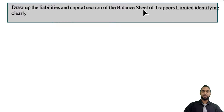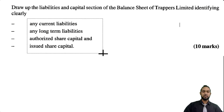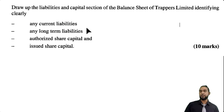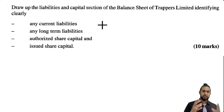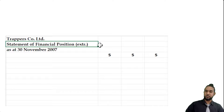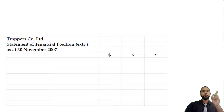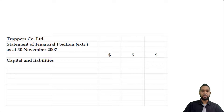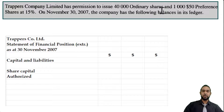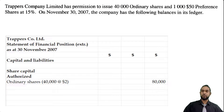Now let's look at Part B, which asks us to draw up the liabilities and capital section of the balance sheet of Trappers Limited, identifying clearly any current liabilities, long-term liabilities, authorized share capital, and issued share capital. Note that in order of permanence, capital comes before liabilities, and we now call it non-current liabilities rather than long-term liabilities. Heading up properly: Trappers Company Limited — Statement of Financial Position as of 30th November 2007. We start with the authorized share capital: 40,000 ordinary shares at $2 each is $80,000, and 1,000 preference shares at $50 is $50,000. Authorized share capital is closed off by itself — it's not added to anything else.